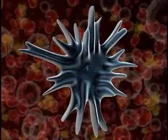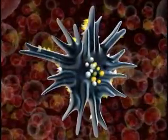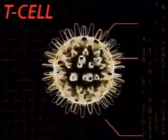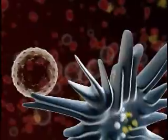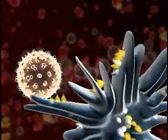Once the complex is engulfed, the dendritic cells break down the key proteins from the unit, presenting all parts on the cell surface. It is from here that the killer T cells are alerted and reprogrammed to fight the internal threat.